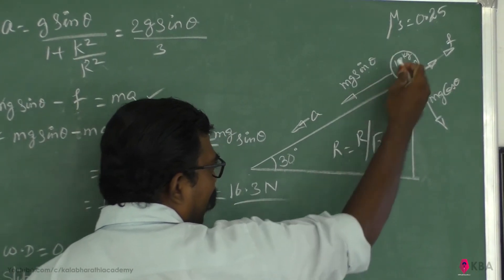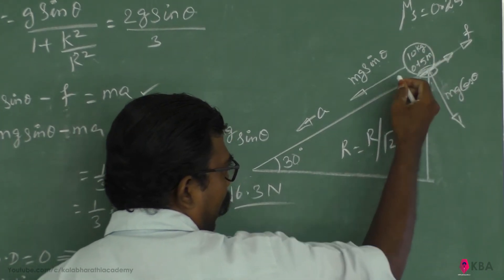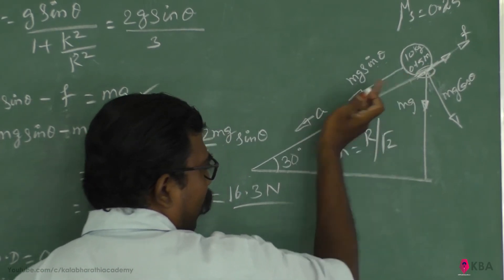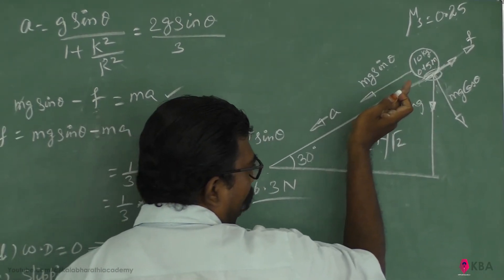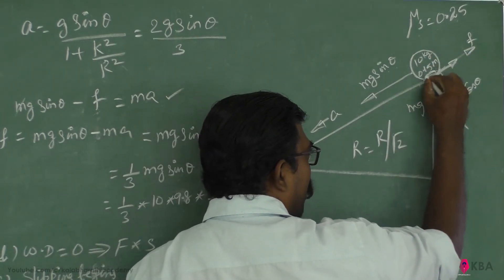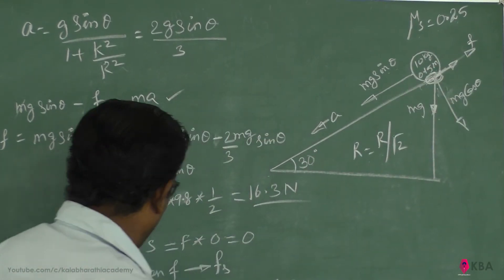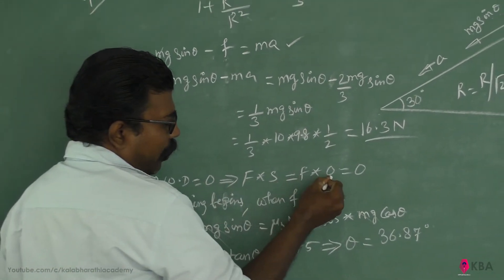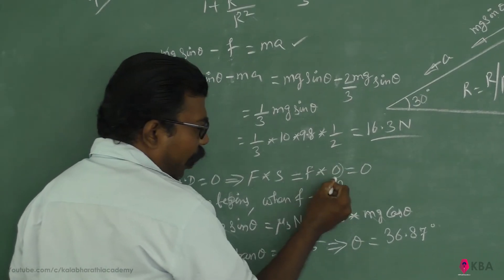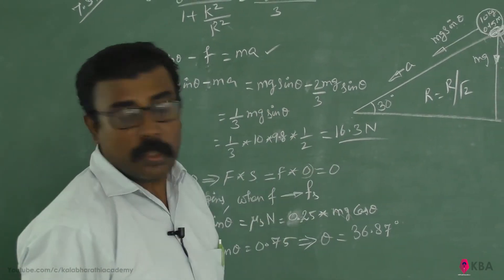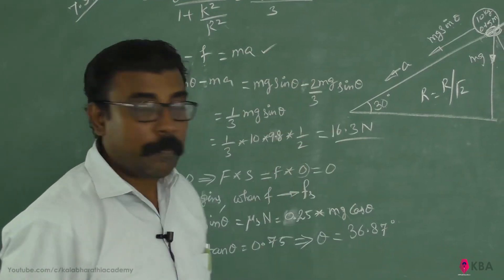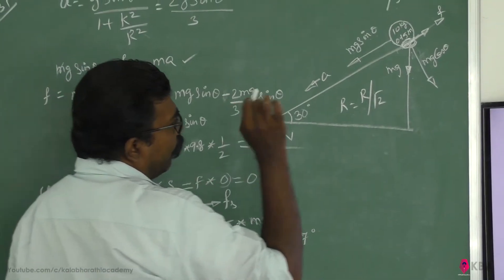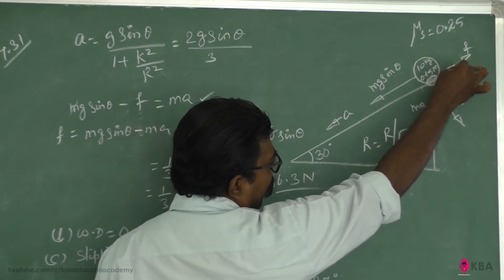Due to the motion of the center of mass, the point of contact with the surface has zero displacement. Therefore, work done equals force times displacement, and since displacement at the point of contact is always zero, the work done against friction is equal to zero.